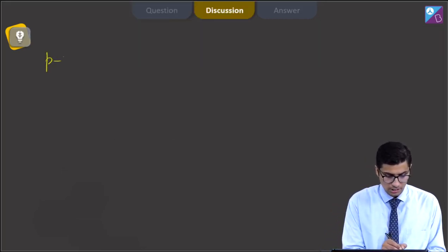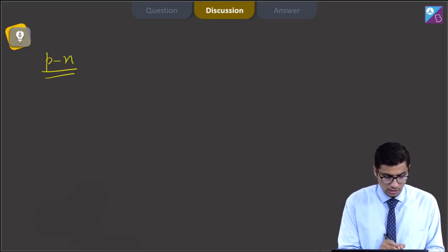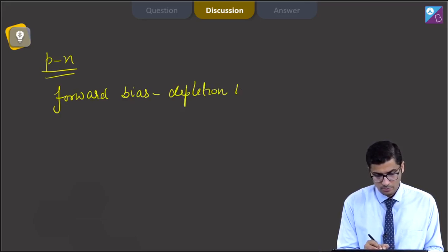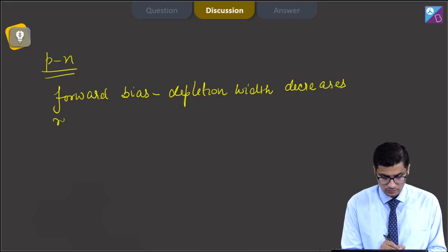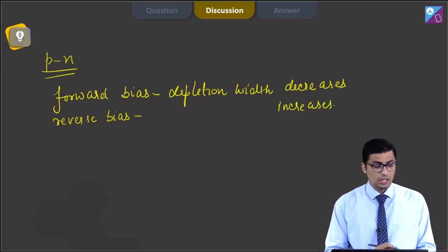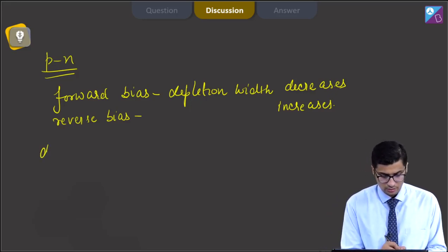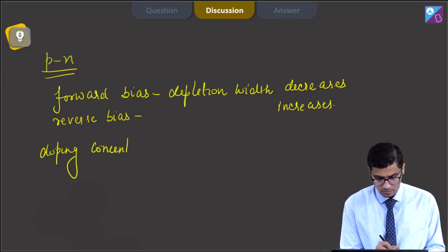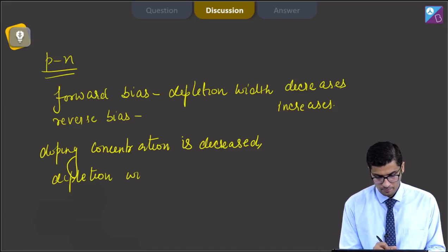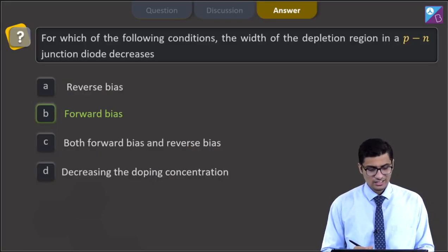In a PN junction diode, the depletion width reduces in forward bias — that is, in forward bias the depletion width decreases. In reverse bias, the corresponding width increases. We must also know that on decreasing the doping concentration, the depletion width increases. Thus, the correct answer is option B, that is forward bias.